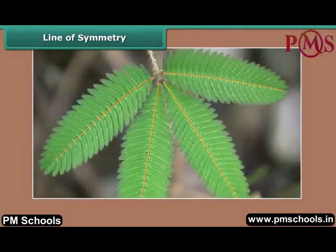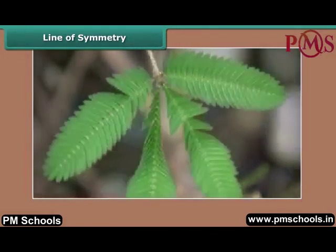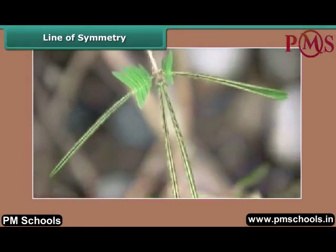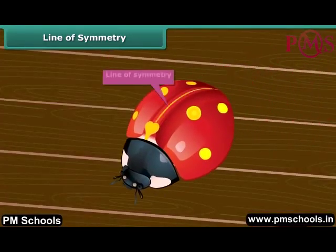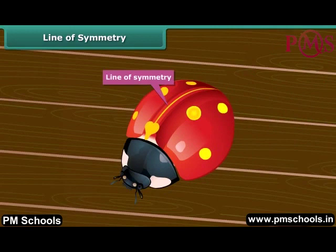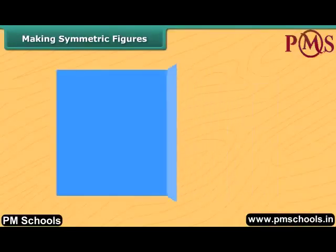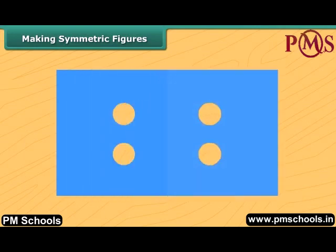Look at the touch-me-not plant leaves. When you touch them, they fold in halves. Can you see the two halves matching each other? This particular line created by the folding of the leaves is called the line of symmetry. This bug also has a line of symmetry along which it folds into two identical halves. Take a piece of cloth, fold it into halves, and cut two small circles from the middle. After unfolding, you can see a symmetric pattern that has a line of symmetry along which it can be cut into two identical parts.